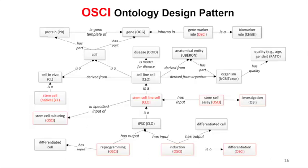Without going into too much detail due to time, the focus of the Ontology for Stem Cell Investigation is really the investigation aspect. It uses the Cell Line Ontology and the cell type ontology. So this represents another important collaborative effort extending the ontology's reach.